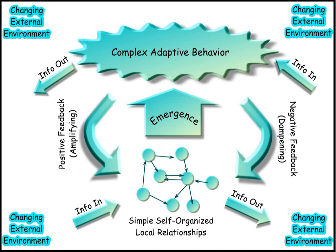A biological system is a complex network of biologically relevant entities. Biological organization spans several scales. Examples of biological systems at the macro scale are populations of organisms. On the organ and tissue scale in mammals and other animals, examples include the circulatory system, the respiratory system, and the nervous system. On the micro to the nanoscopic scale, examples of biological systems are cells, organelles, macromolecular complexes and regulatory pathways. A biological system is not to be confused with a living system, such as a living organism.